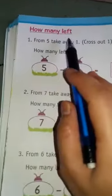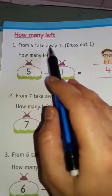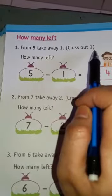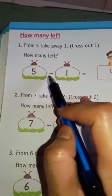Turn to the next page. Page number 44. How many left? Question 1. From 5 take away 1. Cross out 1. How many left? 5 minus 1 equals to 4.